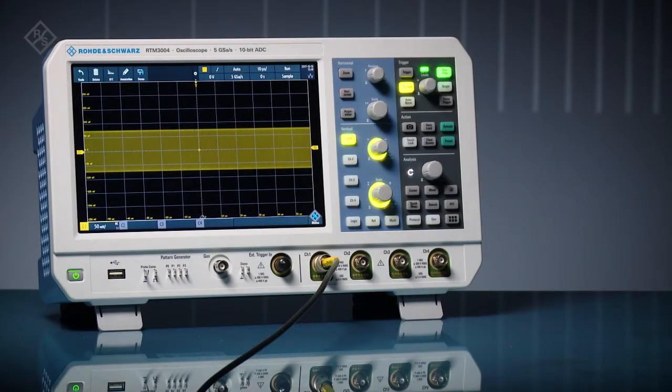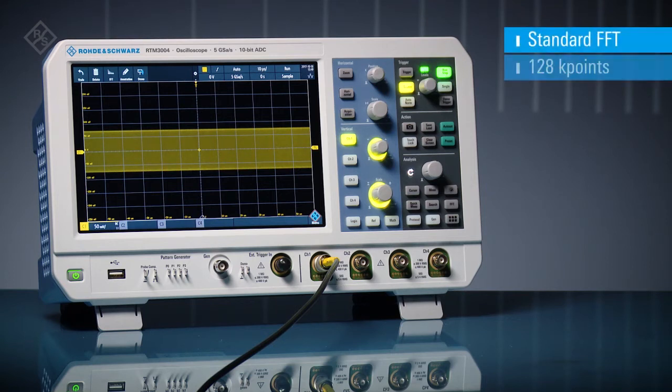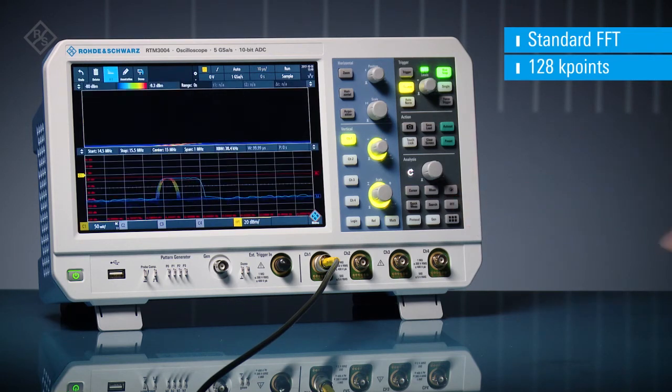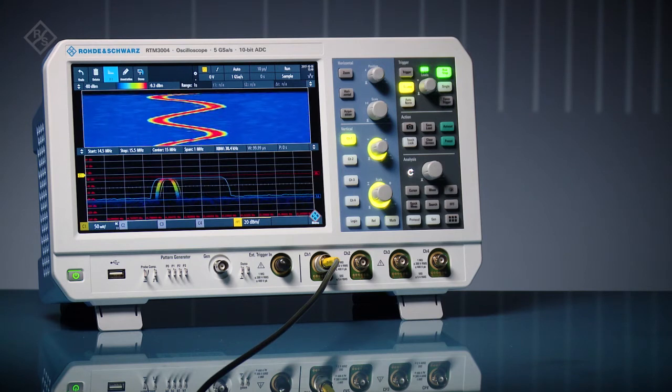Rohde & Schwarz RTM 3000 and RTA 4000 Series Oscilloscopes include FFTs as a standard feature and an option that adds a spectrogram view. Just enable frequency domain analysis with the push of a button. At the bottom, see a live view of the signal's FFT.